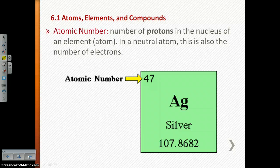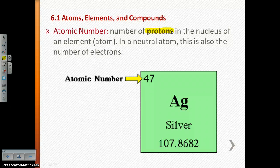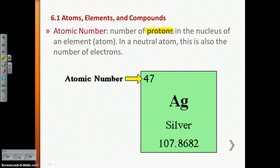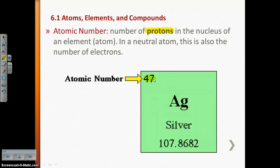The atomic number of an element on the periodic table shows you the number of protons in that atom. In a neutral atom, if you have ten protons, you also have ten electrons, because protons are positively charged and electrons are negatively charged. So in a neutral atom, if the atomic number is 47, that tells you the number of protons but it also tells you the number of electrons.